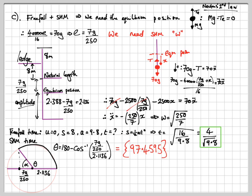Sorry, 180 minus alpha, where alpha is the inverse cos, as shown. And that gives me 97.4595. I've put it in brackets, because when I did this on the calculator, I just used the memory function to keep it all as accurate as possible.